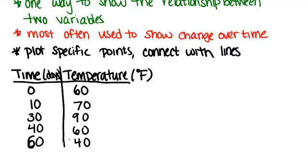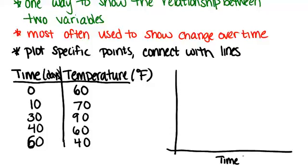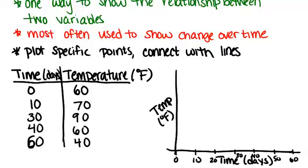The first thing that you want to do is set up your axes, and we really only need to worry about the first quadrant because both variables have only positive values. We'll have time as our independent variable. Anytime you have time, that's always the independent variable, and temperature will be our dependent variable so it's on the y-axis. Then I can label my x-axis and also my y-axis.